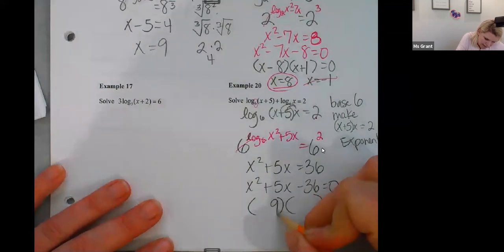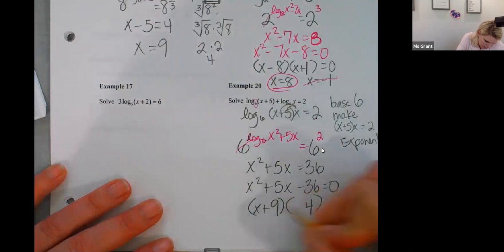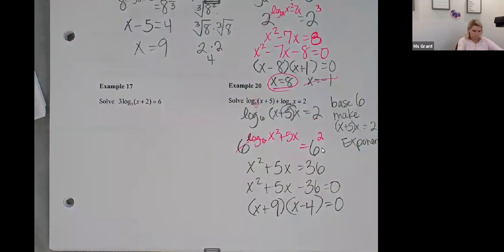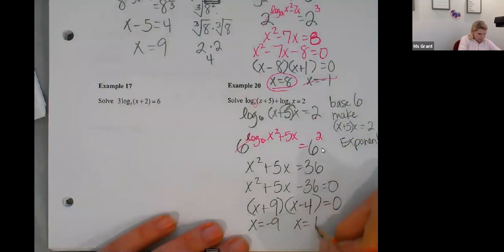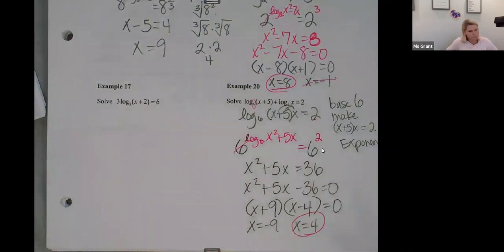X squared plus five X minus 36 equals zero. 36 is nine times four. X plus nine X minus four. X equals negative nine. X equals four. But positive answers.